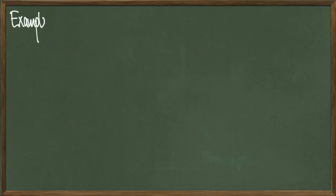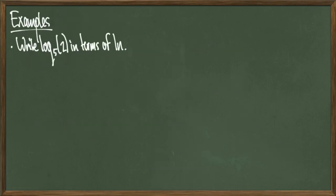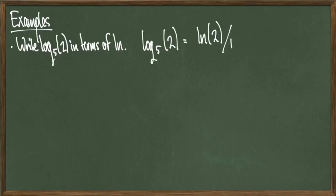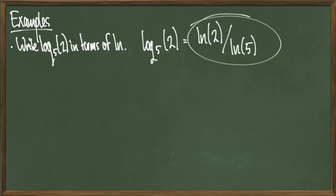Let's look at some more examples. I'll write log base 5 of 2 in terms of natural log. This just invokes the change of base formula, so I get the answer of ln of 2 over ln of 5, and we're done.